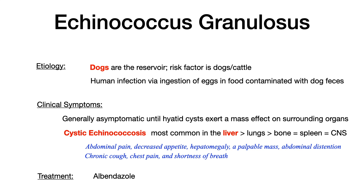When the cysts become symptomatic, the condition is called cystic echinococcosis, and it most often affects the liver. Liver involvement causes abdominal pain, decreased appetite, hepatomegaly, palpable mass, or abdominal distension. If cysts occur in the lungs, expect chronic cough, chest pain, and shortness of breath. Essentially, whatever organ is involved, you get mass effect symptoms. Since liver involvement is most common, expect to see liver mass effect symptoms: GI pain, decreased appetite, hepatomegaly, and palpable mass on exam.